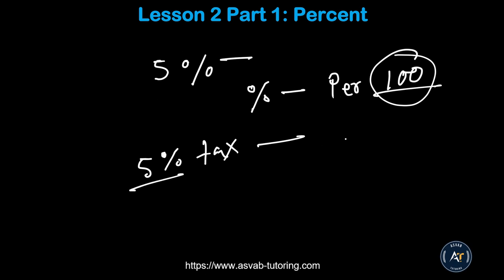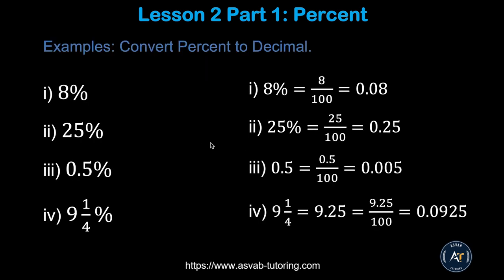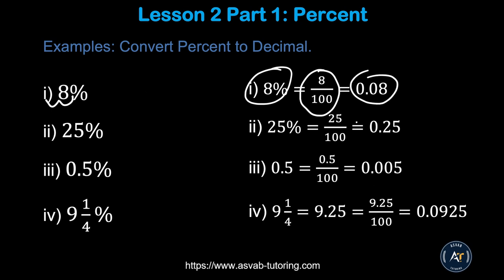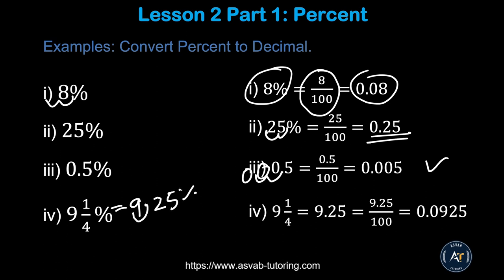Now, how do you convert from percent to decimal? You divide by 100. So eight percent equals 8 over 100, which gives you 0.08. Another way: move the decimal point two places to the left — one, two — giving you 0.08. For 25 percent, move two decimal places to get 0.25. For 0.5 percent, move two places — if you don't have enough digits, fill with zero — giving 0.005. Nine and a quarter percent means 9.25 percent; move two places to get 0.0925.